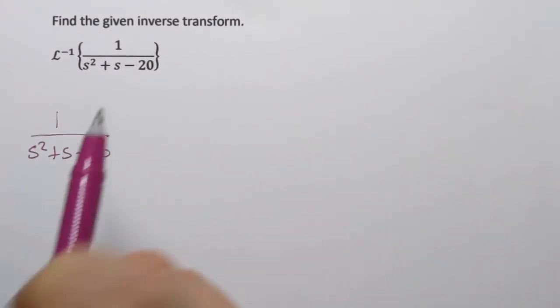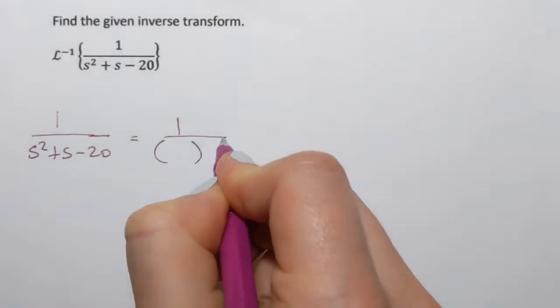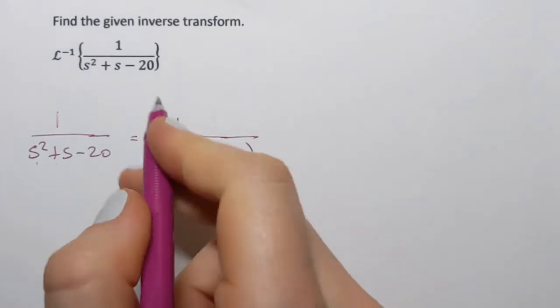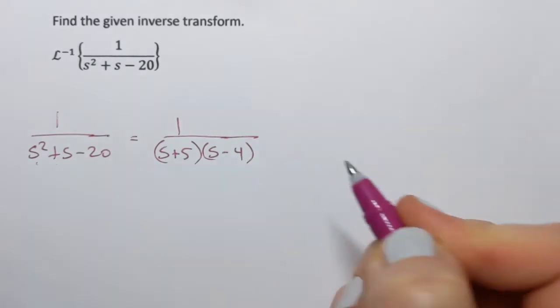To perform partial fraction decomposition, I'm going to start by factoring the denominator. So I have s squared plus s minus 20. I can factor it as s plus 5, s minus 4.